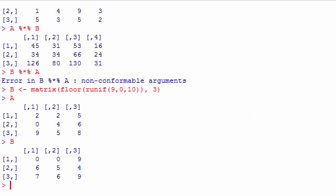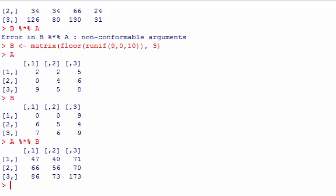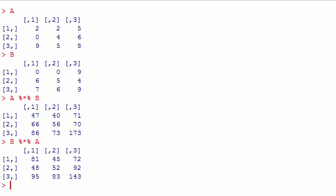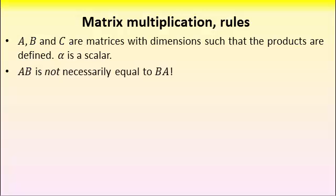For example here A and B are both 3 by 3. So both A times B and B times A are allowed and the product is 3 by 3 in both cases. If I do A times B I get this. The commutative law doesn't hold for matrix multiplication.